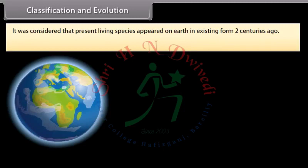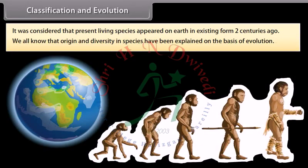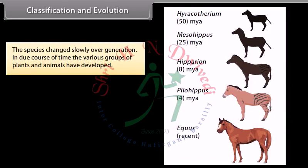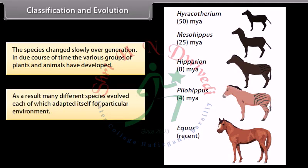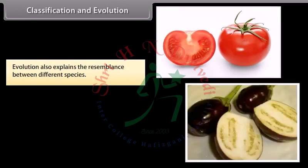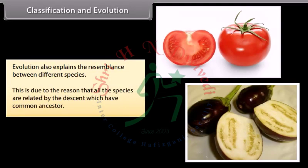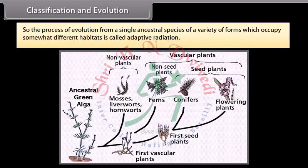It was considered that present living species appeared on earth in their existing form only two centuries ago. We know that the origin and diversity of species have been explained on the basis of evolution. Species changed slowly over generations, and various groups of plants and animals have developed in due course of time. Many different species evolved, each adapted to a particular environment. Evolution also explains the resemblance between different species, as all these species are related by descent from a common ancestor. The process of evolution from a single ancestral species into a variety of forms occupying different habitats is called adaptive radiation.